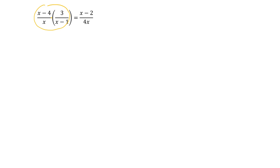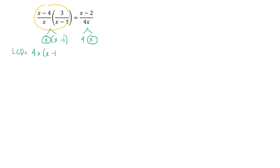Their denominators are the product of x and (x minus 1). On the right side, the denominator is 4x, which is the product of 4 and x. In getting the LCV, we consider the prime factors of the denominators. Since x is a common factor of both denominators on both sides, we consider it once. Hence, the LCV is 4x times (x minus 1).